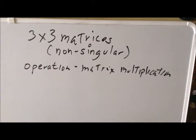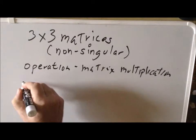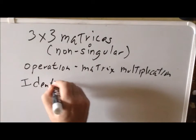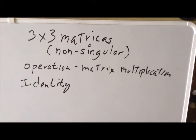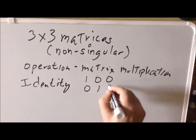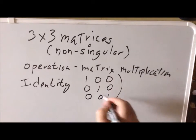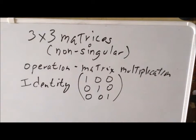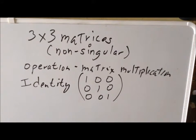We want to show that this set satisfies the requirements of group theory. The first thing we need is an identity. We've already seen what the identity looks like for three by three matrices: it's a matrix with ones along the diagonals and zeros everywhere else. We can show more specifically that this works — we saw it's the identity when multiplied by a three by one column vector, and we can prove it for a three by three matrix as well.